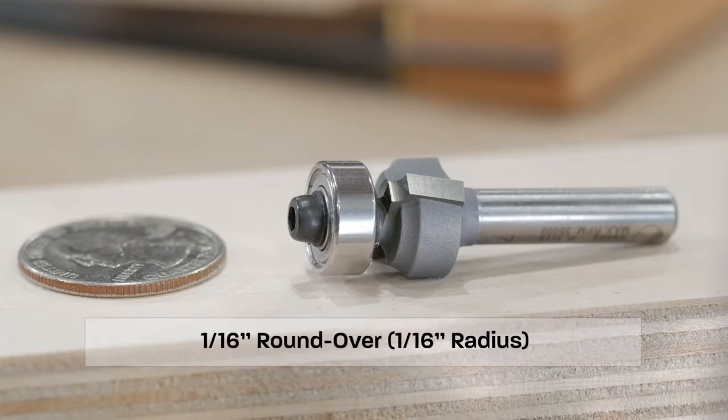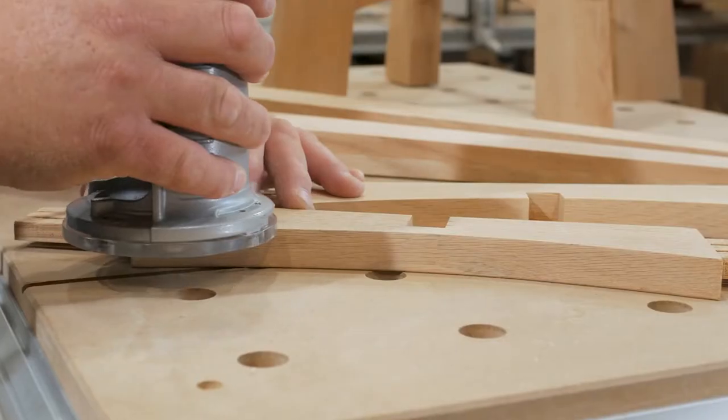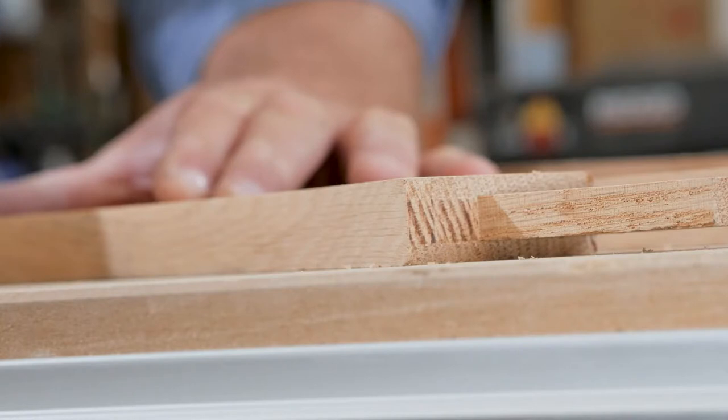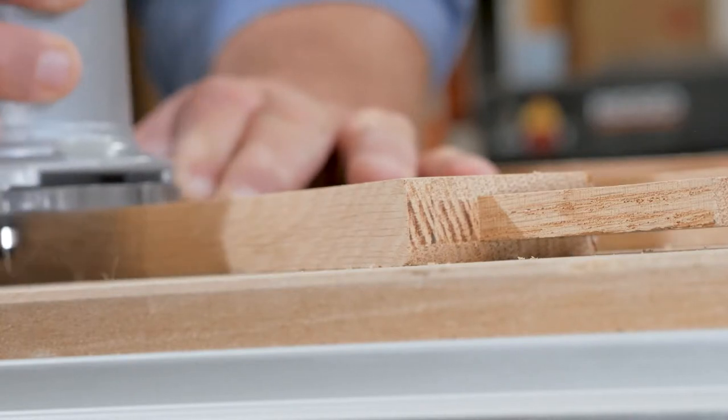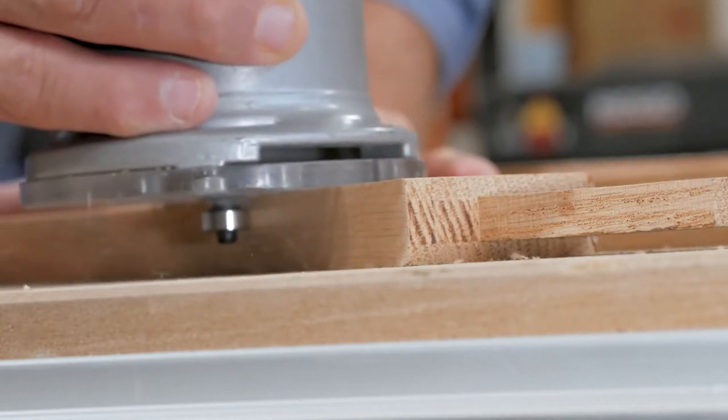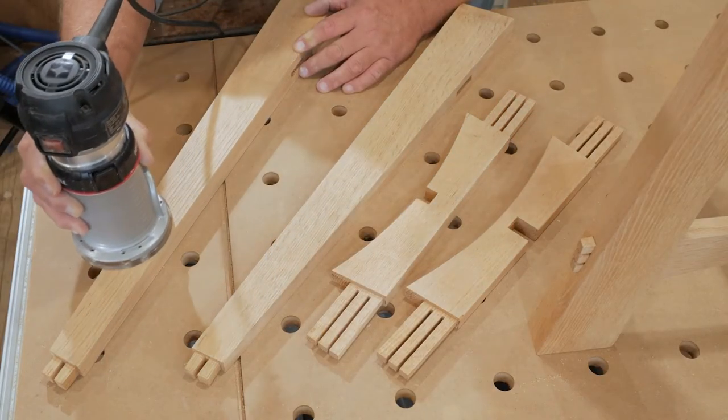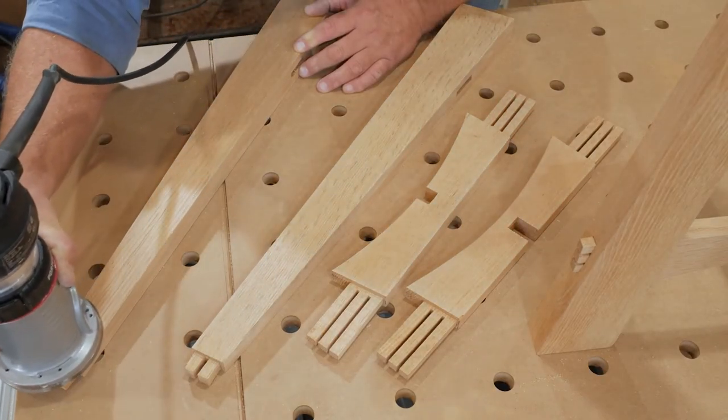First, let's start with the tiniest bit, the 1/16th inch roundover. This bit barely breaks a sweat as it removes very little material. However, when used with a trim router, it can easily break the edge of a finished project. It offers a fast, convenient way to get a consistent roundover every time.